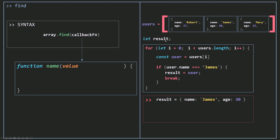Let's talk about that callback function. You can call it any name you want, as long as it's not reserved. The first parameter is going to be the value, which represents the element in your array. The second parameter is going to be the index — 0, then 1, then 2. The last one is going to be the array itself — the array you called find upon. Sometimes you don't have access from within your function to that array, so you just use the third parameter.